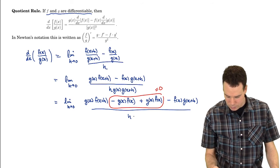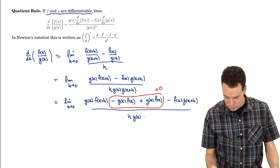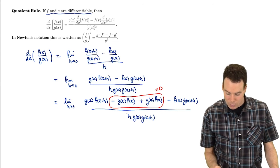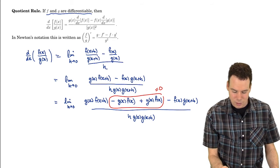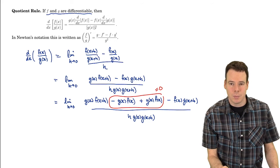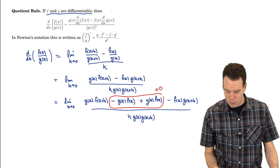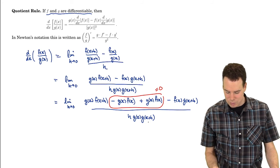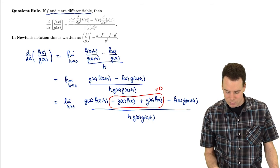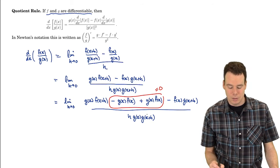And all of that's over this h, g of x, g of x plus h. By the way at this point you should start to see where the square of g is coming from in the denominator of the quotient rule. So I can see I've got two copies of g in the bottom here. One of them is g of x plus h but as h goes to 0 that's just going to go to g of x. So I get a g of x squared in the bottom. You can see where that's coming from now.